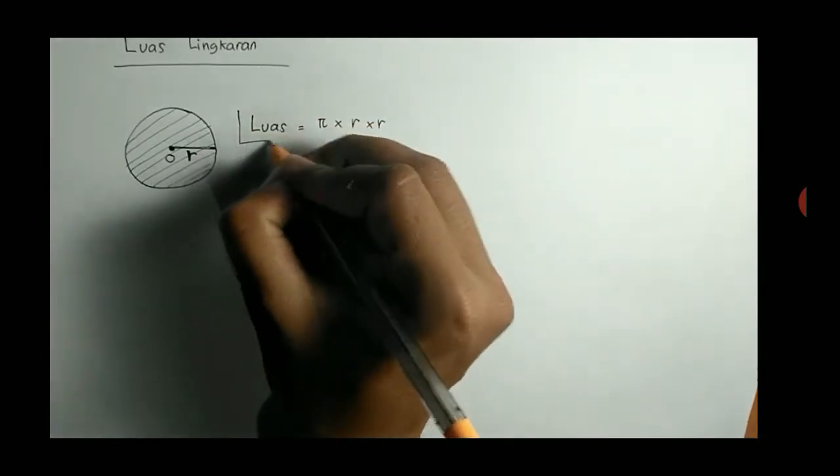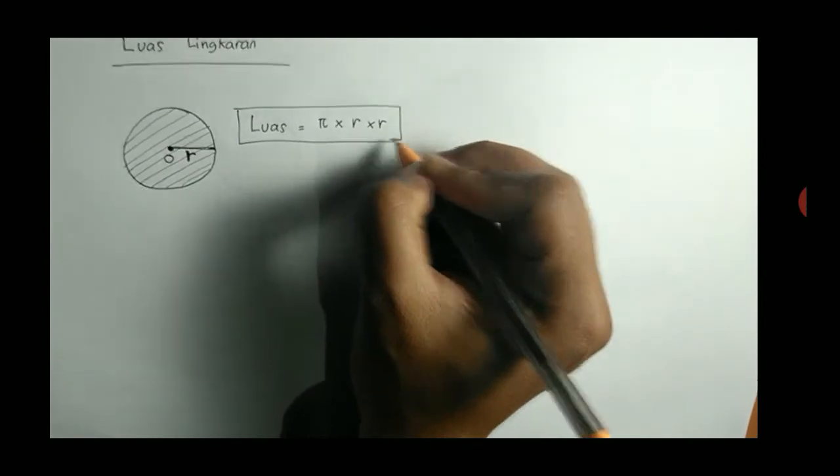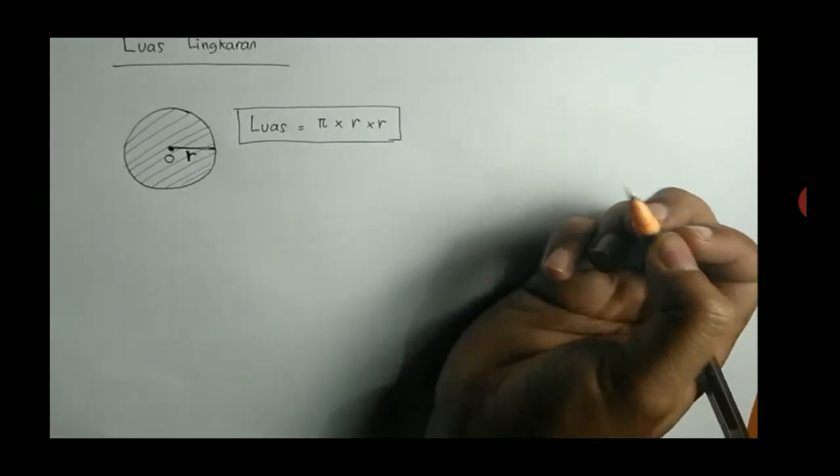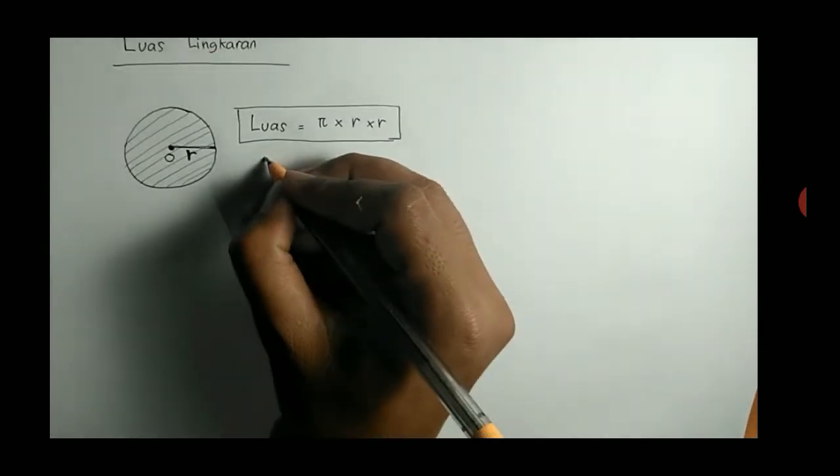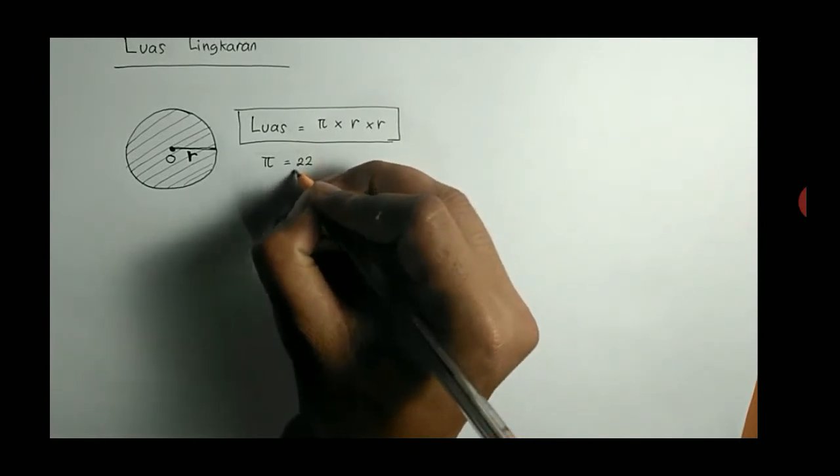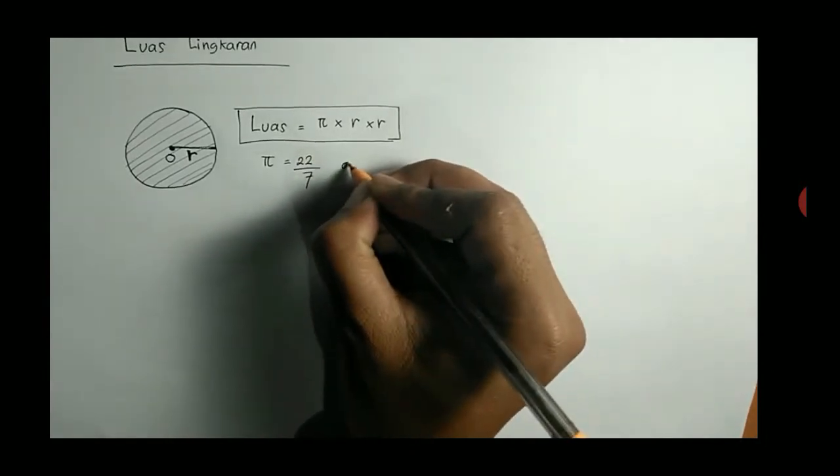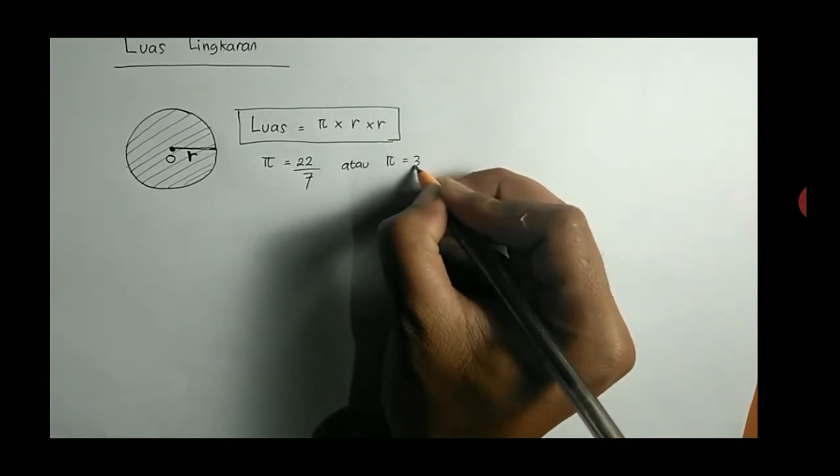Atau banyak juga buku yang menuliskan P dikali R pangkat 2 atau R kuadrat. Artinya R pangkat 2 itu, R dikali R. Saya ingatkan kembali, P di sini, huruf Yunani, itu bisa 22 per 7 atau 3,14.